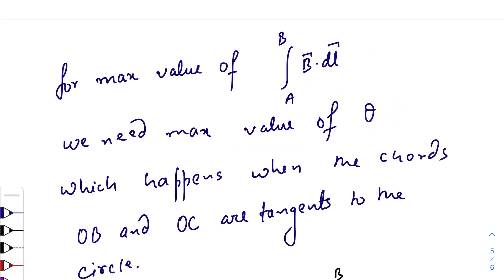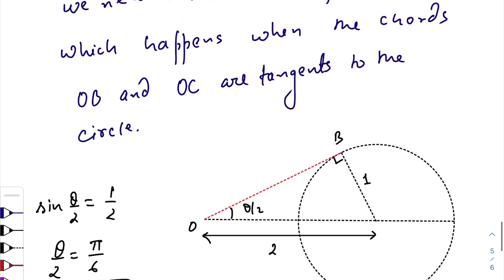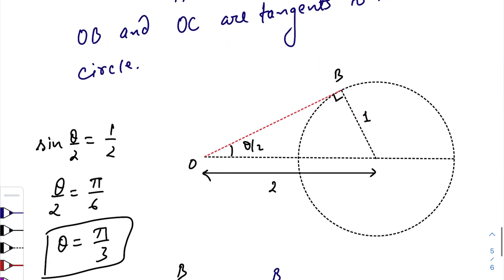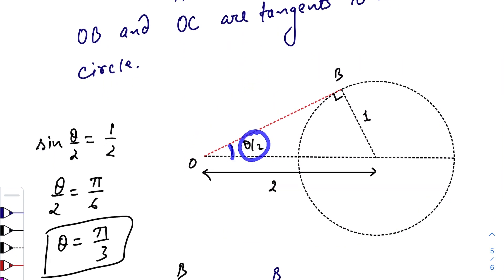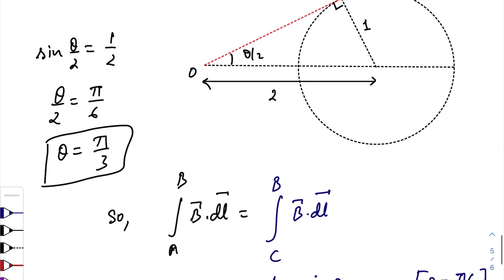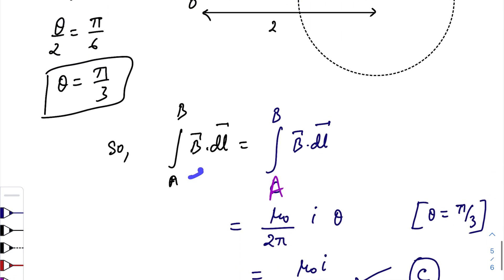For maximum value of B dot dl, we need the maximum value of theta. We get maximum theta when these two chords form tangents on this circle. If this angle is θ/2, then sin(θ/2) = perpendicular/hypotenuse, so θ/2 = π/6, therefore θ = π/3.